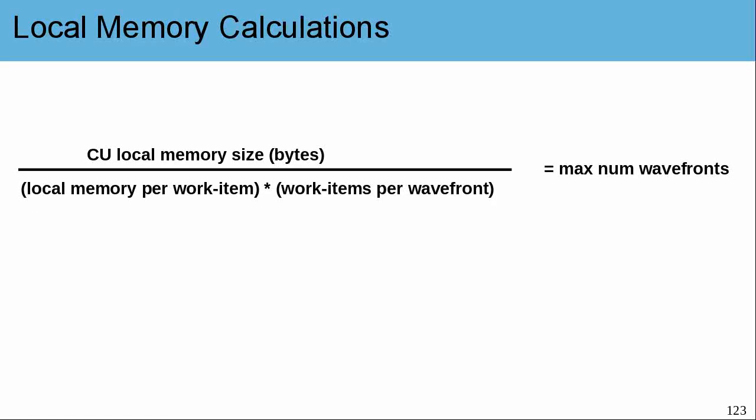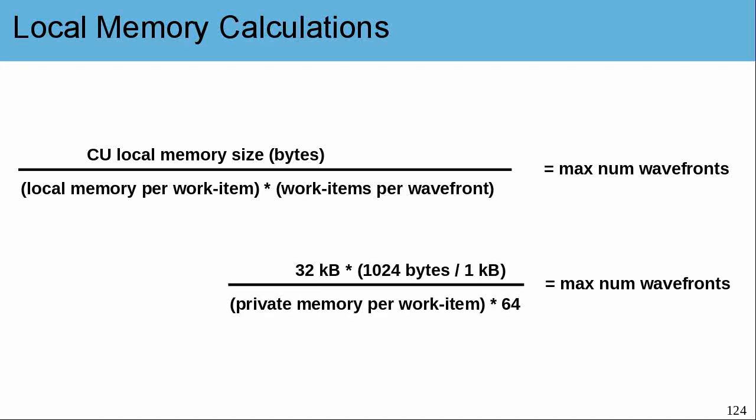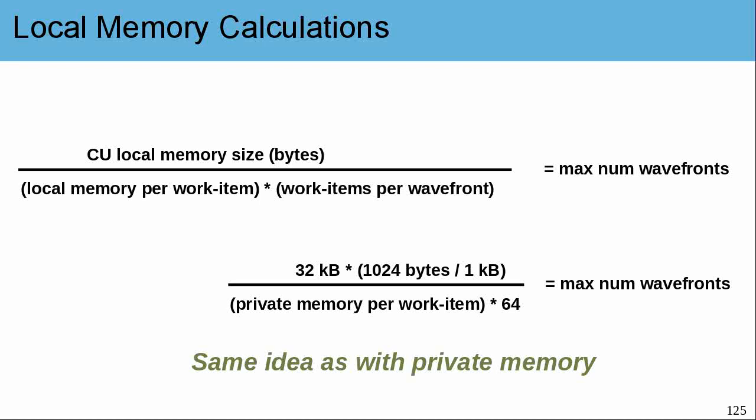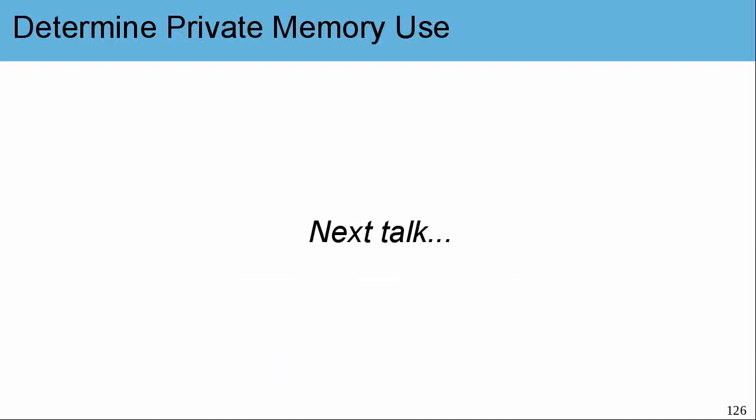The same calculation applies for local memory — we just change from private memory to local memory. Substituting the 7970's local memory size of 32 kilobytes from vendor documentation, everything else is basically the same. How you determine the actual amount of private memory being used will come from another talk — so far we're just looking at general concepts, so that when I show you the code, everything starts to make a lot of sense.